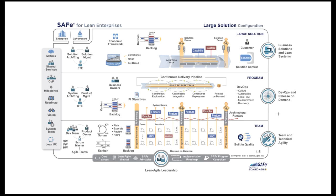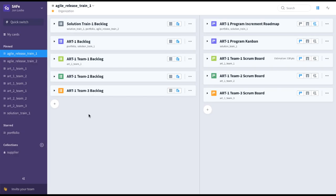Now for the second SAFe configuration — Large Solution. We've seen the team level and multiple teams of teams at the program level. What happens when you have multiple Agile Release Trains working on a very large solution, making up a solution train? This is where Large Solution SAFe comes into play. In this example, we've added a second Agile Release Train with its various teams, as well as a solution train or large solution level collection.